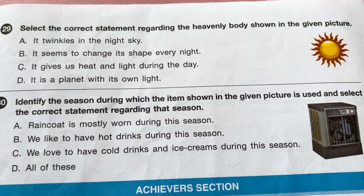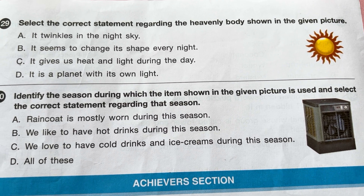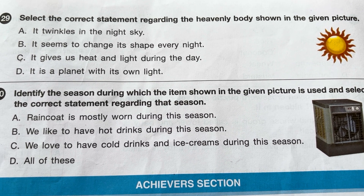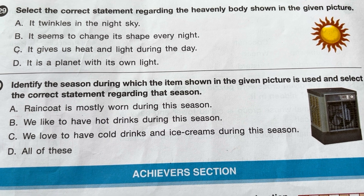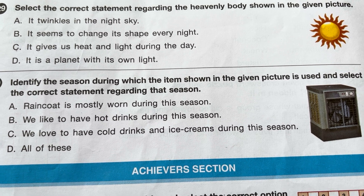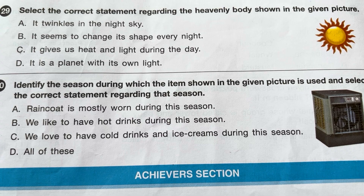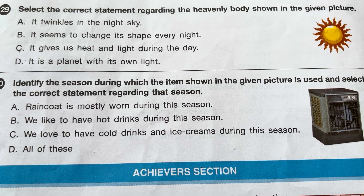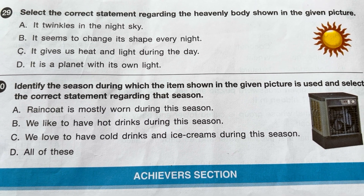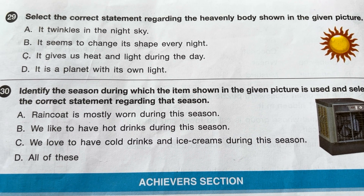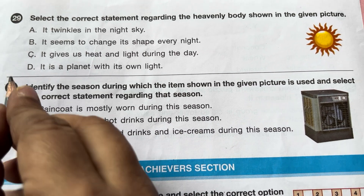Select the correct statement regarding the heavenly body shown in the given picture. A: it twinkles in the night sky. B: it seems to change its shape every night. C: it gives us heat and light during the day. D: it is a planet with its own light. The correct statement is C — it gives us heat and light during the day. Answer is C.